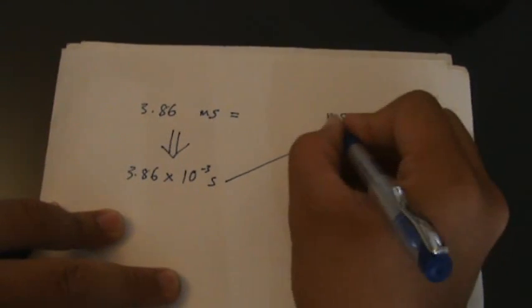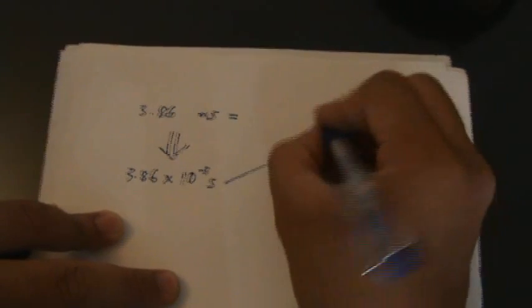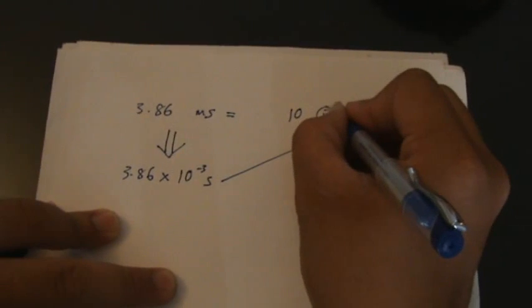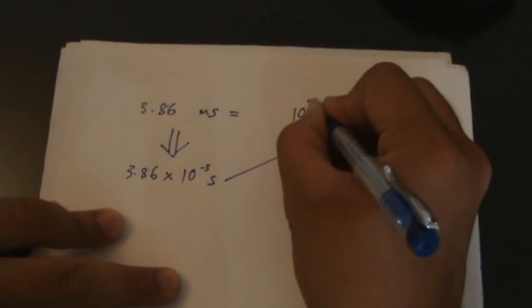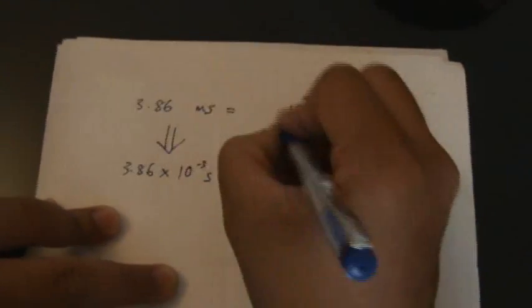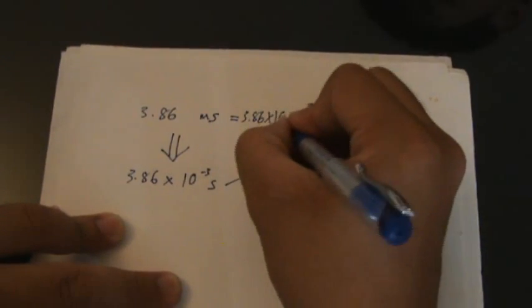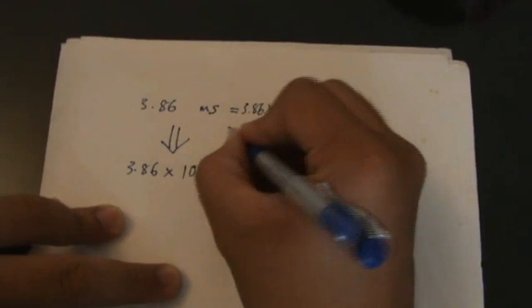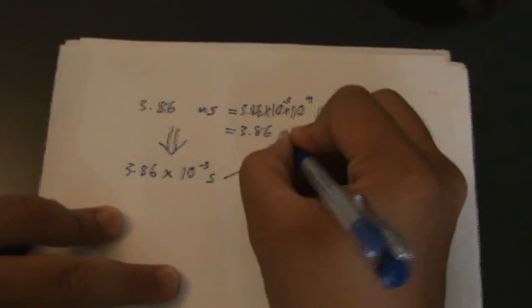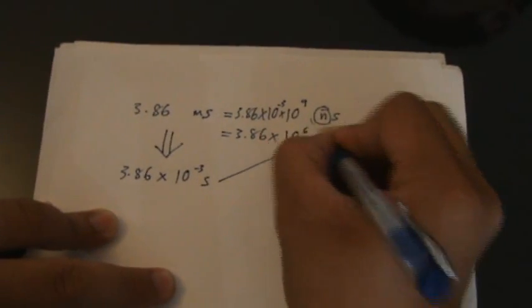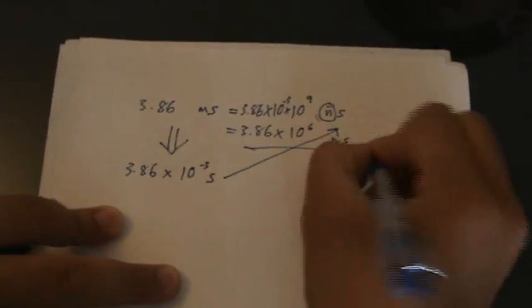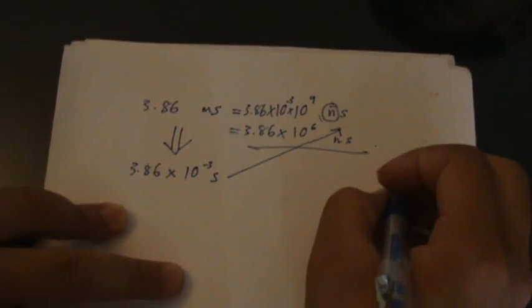Second, to go from seconds to nanoseconds involves creating nano. If you want to create nano, you have to put the exponent of nano, which is negative 9, so here put 10 power of 9. So this one: 3.86 times 10 power of negative 3 times this, you get 3.86 times 10 power of 6 nanoseconds.